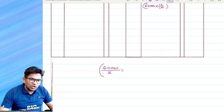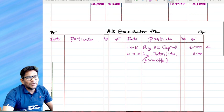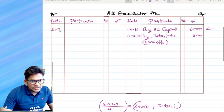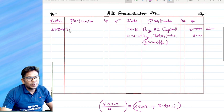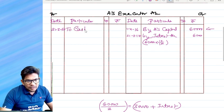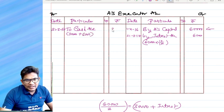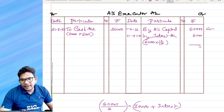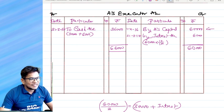If you are making two installments, means 30,000 is the principal amount, plus we pay interest. 30,000 is the principal amount plus interest. Just note, on 31st March 2017, to cash account, we are paying 30,000 principal plus 6,000 interest. How much are we paying? 36,000.